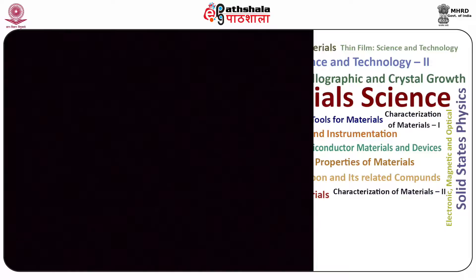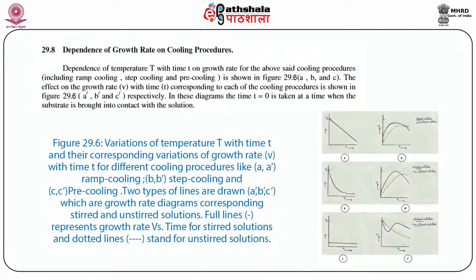Now we shall take up heterogeneous nucleation and discuss the dependence of growth rate on cooling procedures. The dependence of temperature T with time t on growth rate for cooling procedures — including ramp cooling, step cooling, and pre-cooling — is shown in figure 29.6A, B, and C. The effect on the growth rate v with time t corresponding to each cooling procedure is shown in figure 29.6 A', B', and C' respectively.